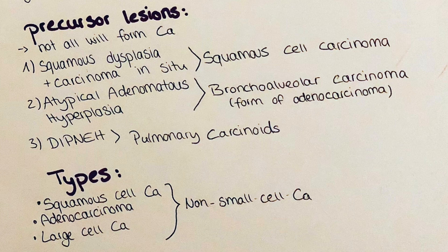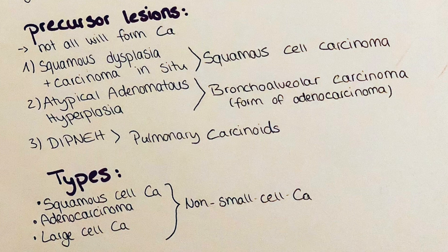Precursor lesions often do not cause any symptoms before metastasis, but for pathology this is important to know. For lung tumors, we differentiate between three distinct precursor lesions. The first is squamous dysplasia, which is a carcinoma in situ — meaning it hasn't yet invaded the surrounding tissue or the basal membrane — and is a precursor for squamous cell carcinoma. Secondly, atypical adenomatous hyperplasia is a precursor lesion for bronchoalveolar carcinoma, which is a form of adenocarcinoma. The third precursor lesion is diffuse idiopathic pulmonary neuroendocrine cell hyperplasia, which is a precursor lesion for pulmonary carcinoids.